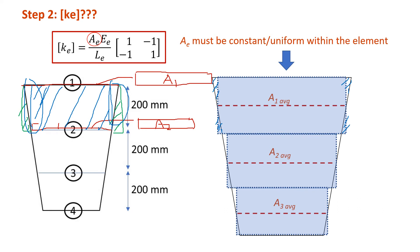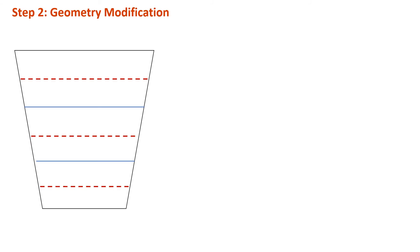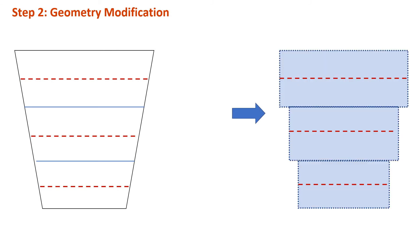In other words, if we have this type of problem, we have to do a geometry modification — transforming from the tapered shape into a stepped shape. For complex shapes, using more elements makes our solution more accurate, because the stepped approximation becomes much closer to the original tapered shape.